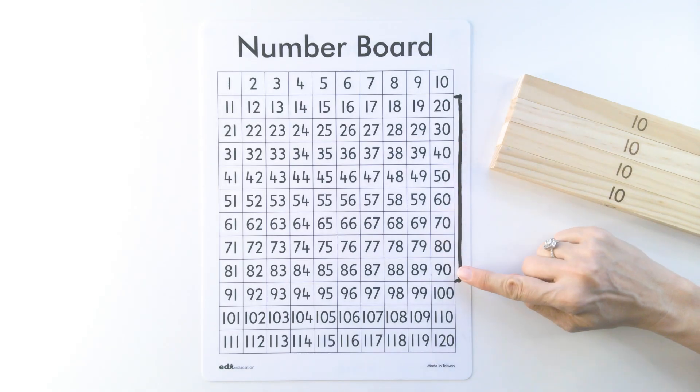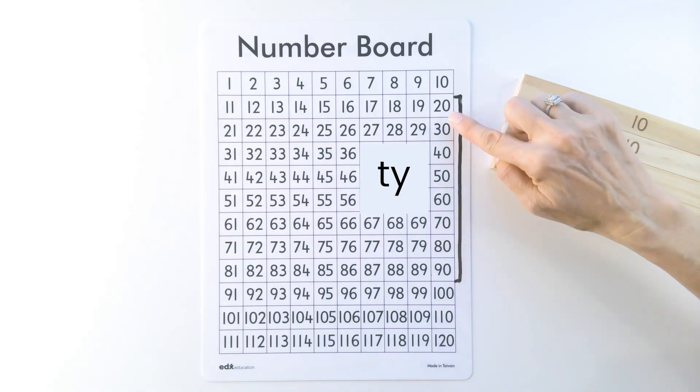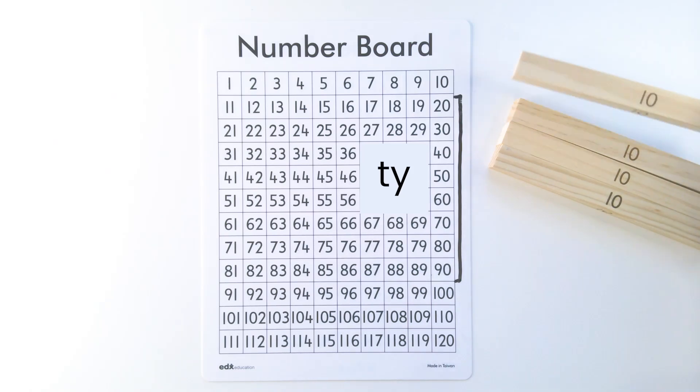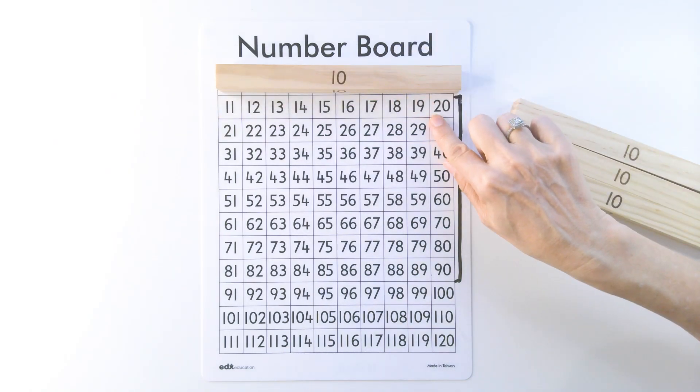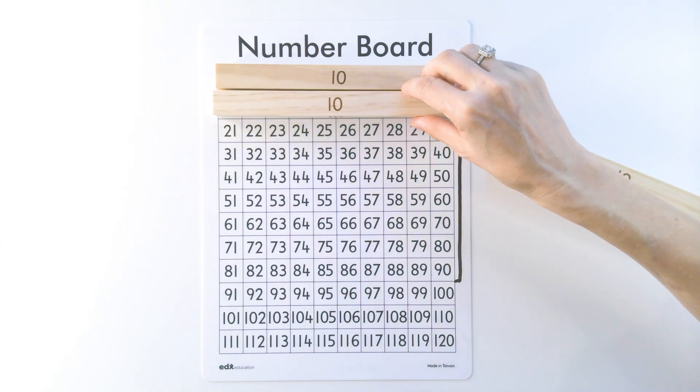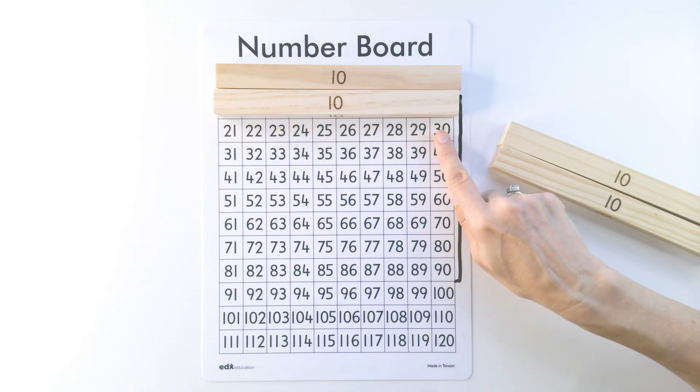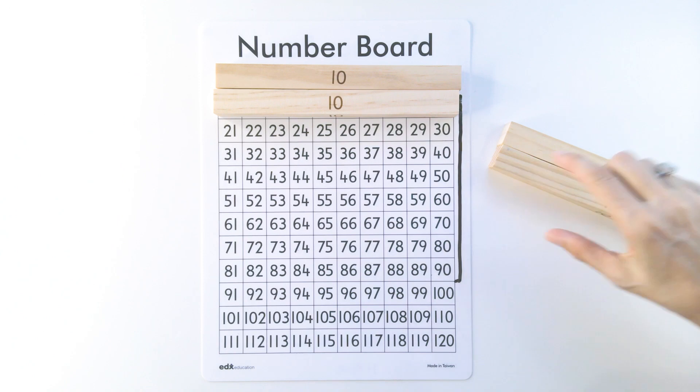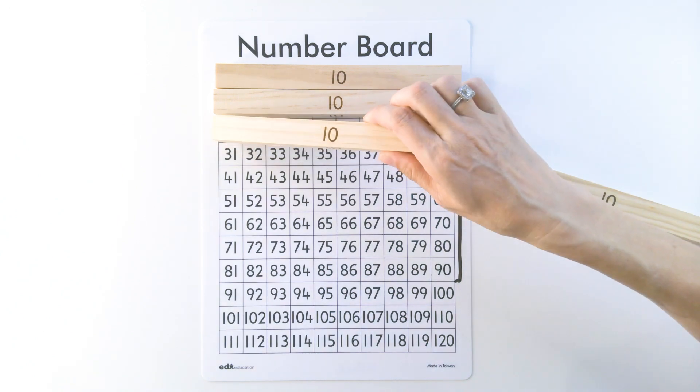Ty means lots of 10s. So 20 means 2 tens. 30 means 3 tens.